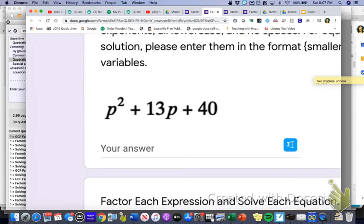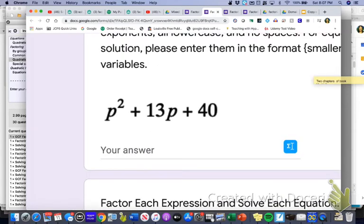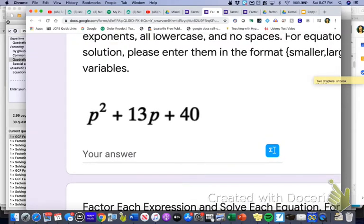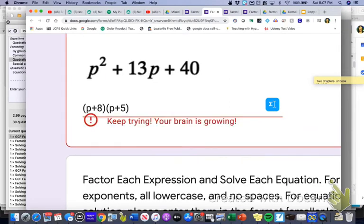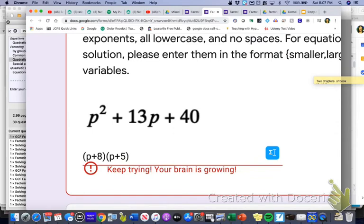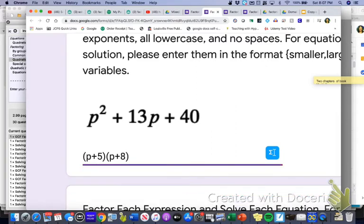Okay, for the second one, when I factored it, I got P plus 5 and P plus 8. So make sure that you type them with the smallest one first, because otherwise it won't work either. So for example, let's say I put in P plus 8 and P plus 5. Even though that's technically correct, it's asking you to put in the smaller first. So make sure you do P plus 5 and then P plus 8, and then it'll count it as correct.